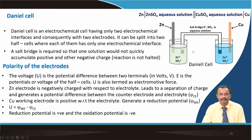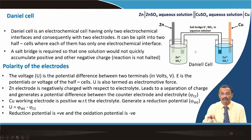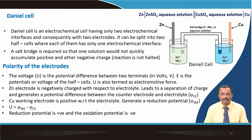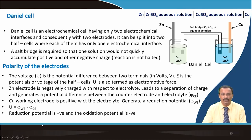The voltage is the potential difference between the two terminals, measured in volts. E is used for the potential or voltage of an individual half-cell. U is termed the electromotive force when there is no load. The zinc electrode is negatively charged with respect to the electrolyte, generating a potential difference φ_CE (counter electrode), while copper is positive — generating a reduction potential φ_WE. Thus U = φ_WE − φ_CE. Usually, reduction potential is positive and oxidation potential is negative.